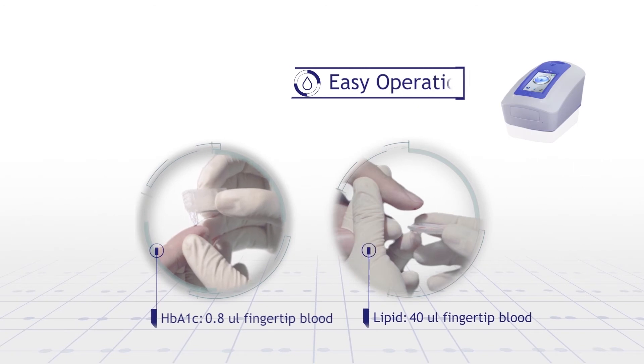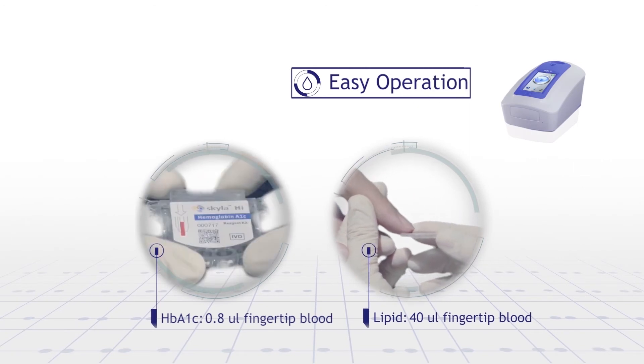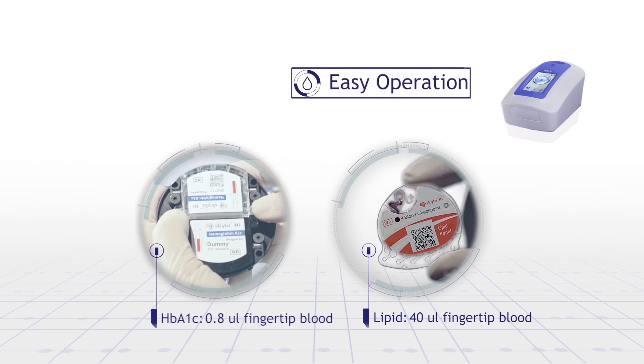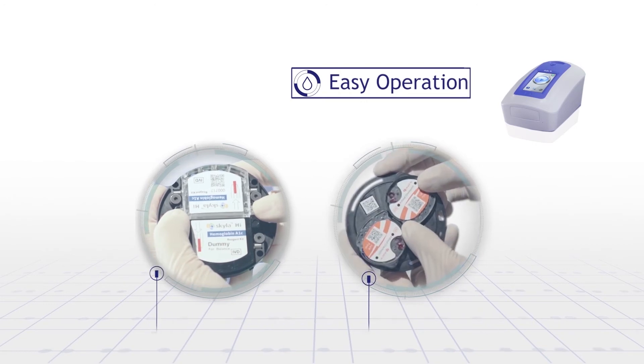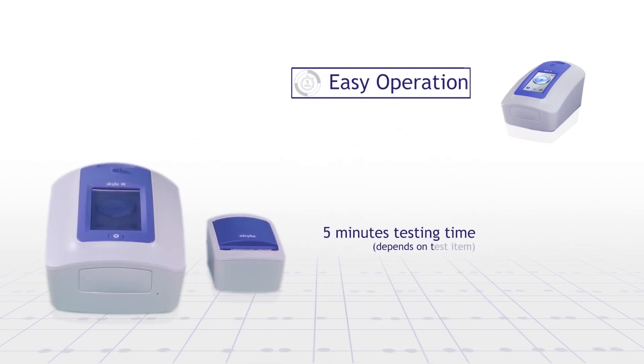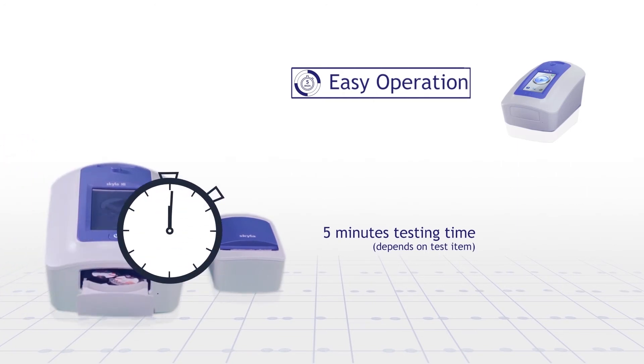Fingertip blood sample: only 0.8 to 30 microliter fingertip blood sample. Depending on the sample amount, you can get different test items results. Through simple steps, you can obtain accurate results within five minutes.